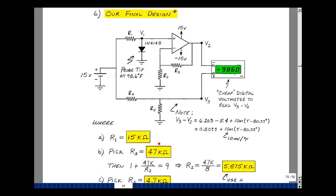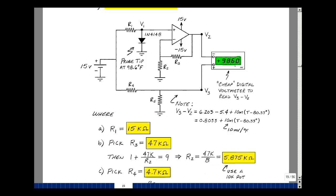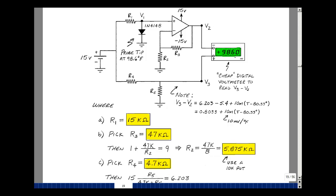Pick something in between. I picked 47k, totally arbitrary. You could pick another resistor value. 1 plus 47k over R2 equals 9, giving R2 equals 47k over 8, or 5.875k. It's not a standard resistor value, so I'm going to use a pot and adjust it to give me the value that I want.